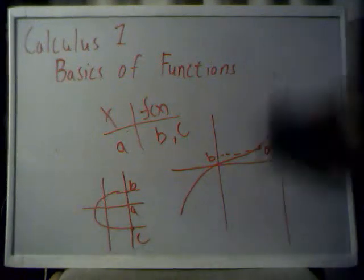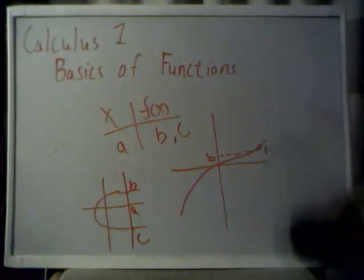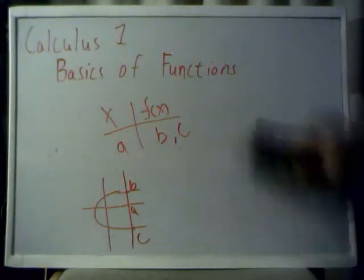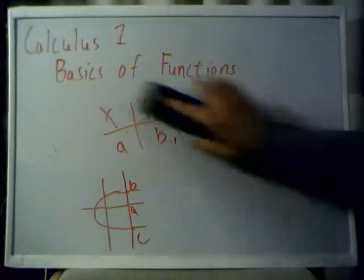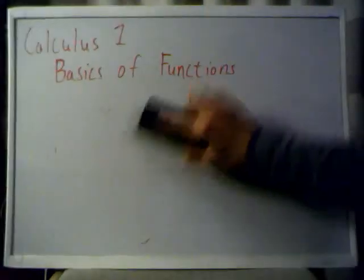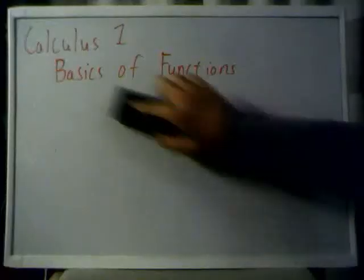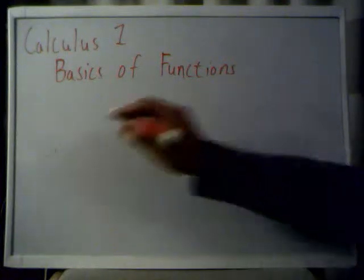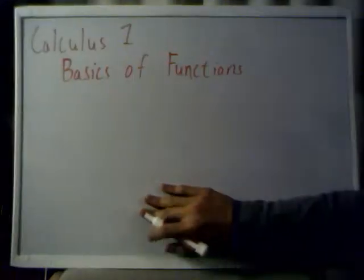Therefore, this is not a function, because it fails the vertical line test and the fact that there are multiple values for f of x for this x value. The vertical line test just basically tests if a curve is a function or not. And as I promised you last time, we're going to go over the symmetry of functions.